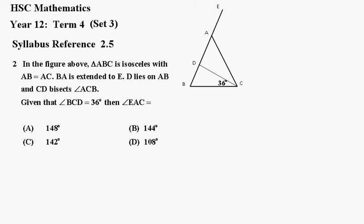Number 2. In the figure above, triangle ABC is isosceles with AB equal to AC.